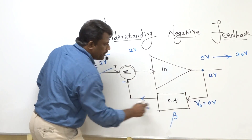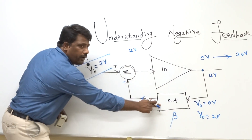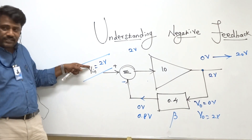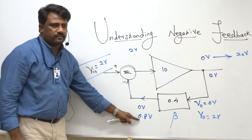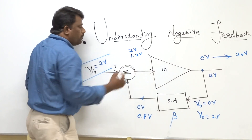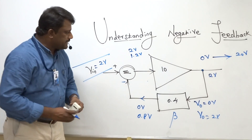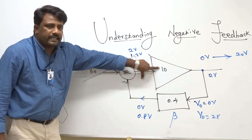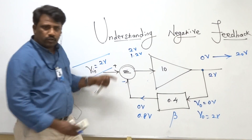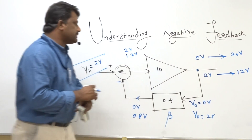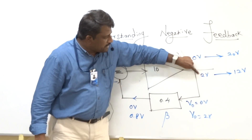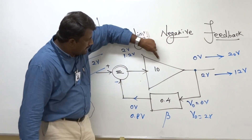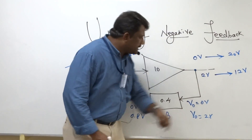After some time assume V₀ raises to 2 volts. The feedback signal is 2 × 0.4 = 0.8 volts. The new difference is 2 minus 0.8 = 1.2 volts, and 1.2 × 10 = 12 volts is the new target. So the negative feedback now instructs the amplifier to raise its output from 2 volts toward 12 volts.